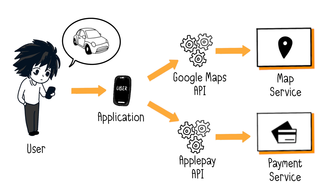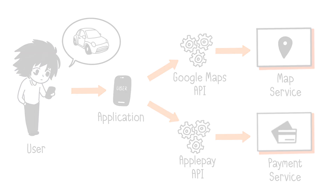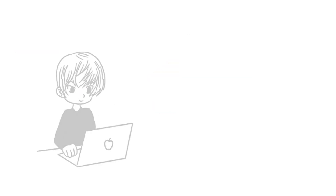For the user, this is transparent. Everything happens within the Uber app. Users see the app with the range of accessible services, irrespective of what each service does.